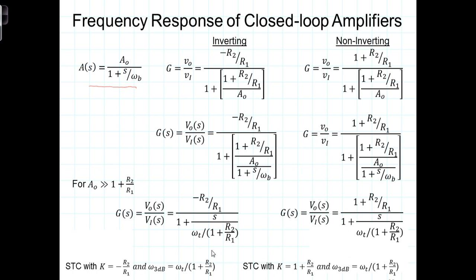In this case, the gain term is negative R2 over R1, which we're talking about the inverting. So the DC gain term is just negative R2 over R1, the K term. And the cutoff frequency is omega-T divided by 1 plus R2 over R1, where omega-T is the unity bandwidth, the unity gain bandwidth, A0 times omega sub B.